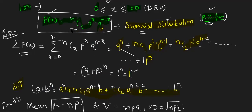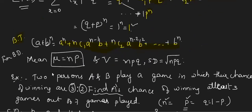For a binomial distribution, the mean is given by n·p and the variance is given by n·p·q, so the standard deviation is √(npq). The derivation is not in the syllabus but these results should be remembered.